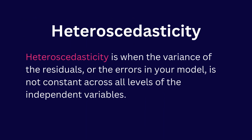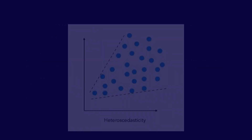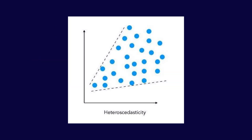Heteroskedasticity is when the variance of the residuals, or the errors in your model, is not constant across all levels of the independent variables. If your residuals have varying spread, like this scatter plot here, it indicates heteroskedasticity.